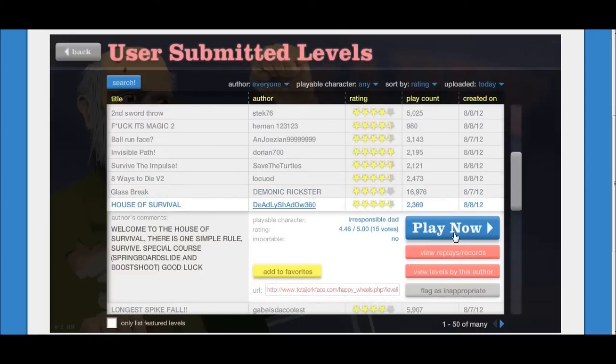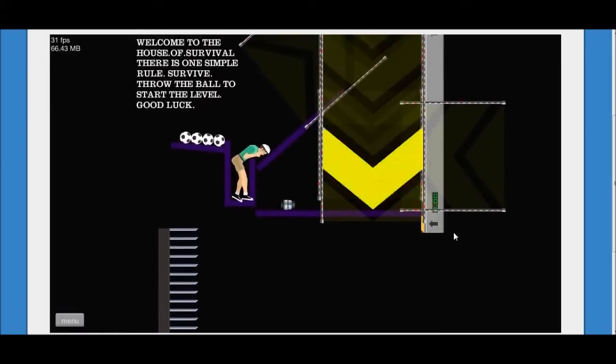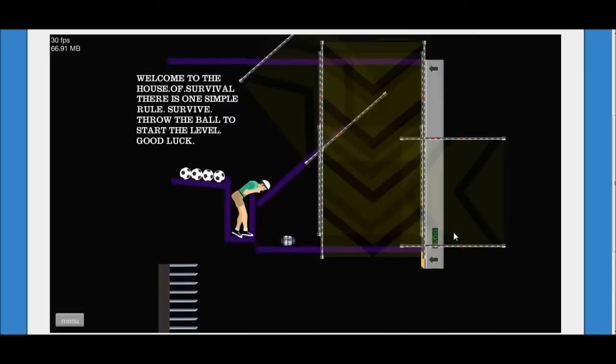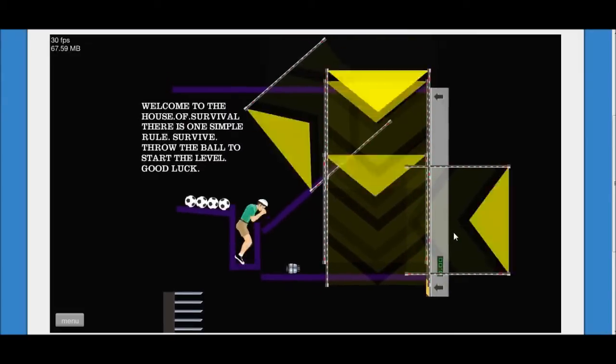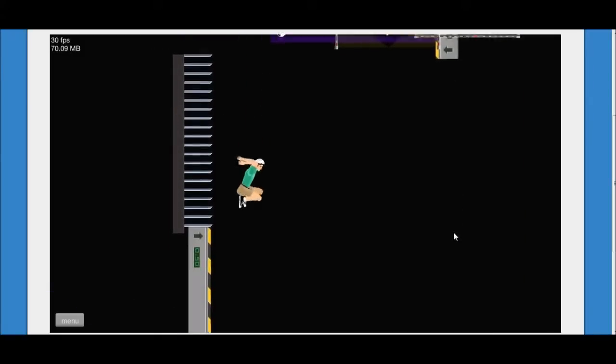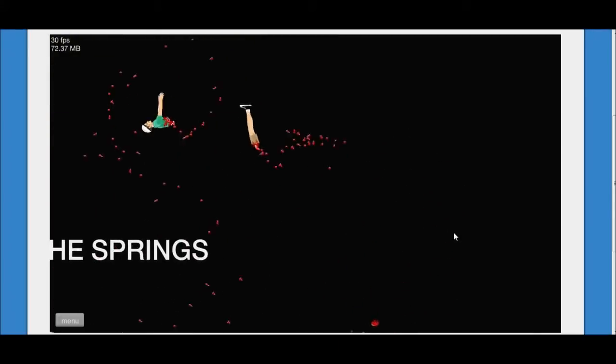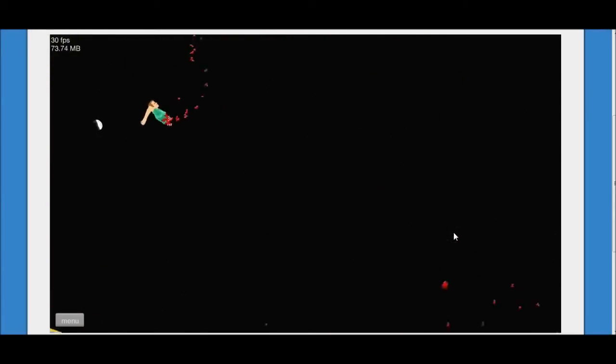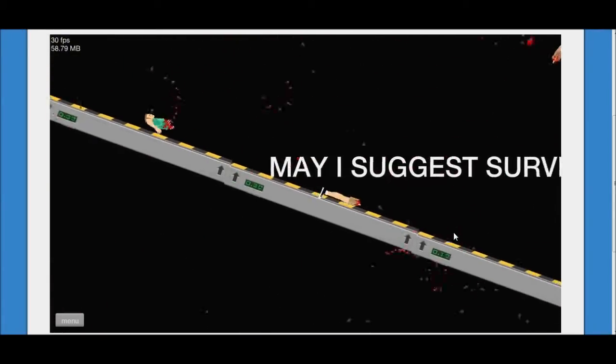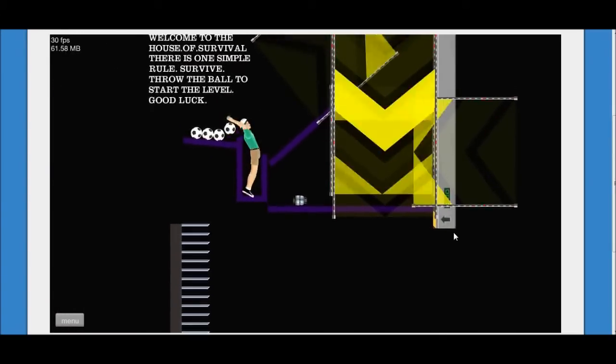House of Survival. This will be the last one. Oh, it's a throwing level? Welcome to the House of Survival. There is one simple rule. Survive. Throw the ball to start the level. Good luck. Throw. Oh. Oh, I... Oh, shit. Am I dead? No, I'm alive. Nope. Just kidding. I'm dead. May I suggest surviving? You are a dick.